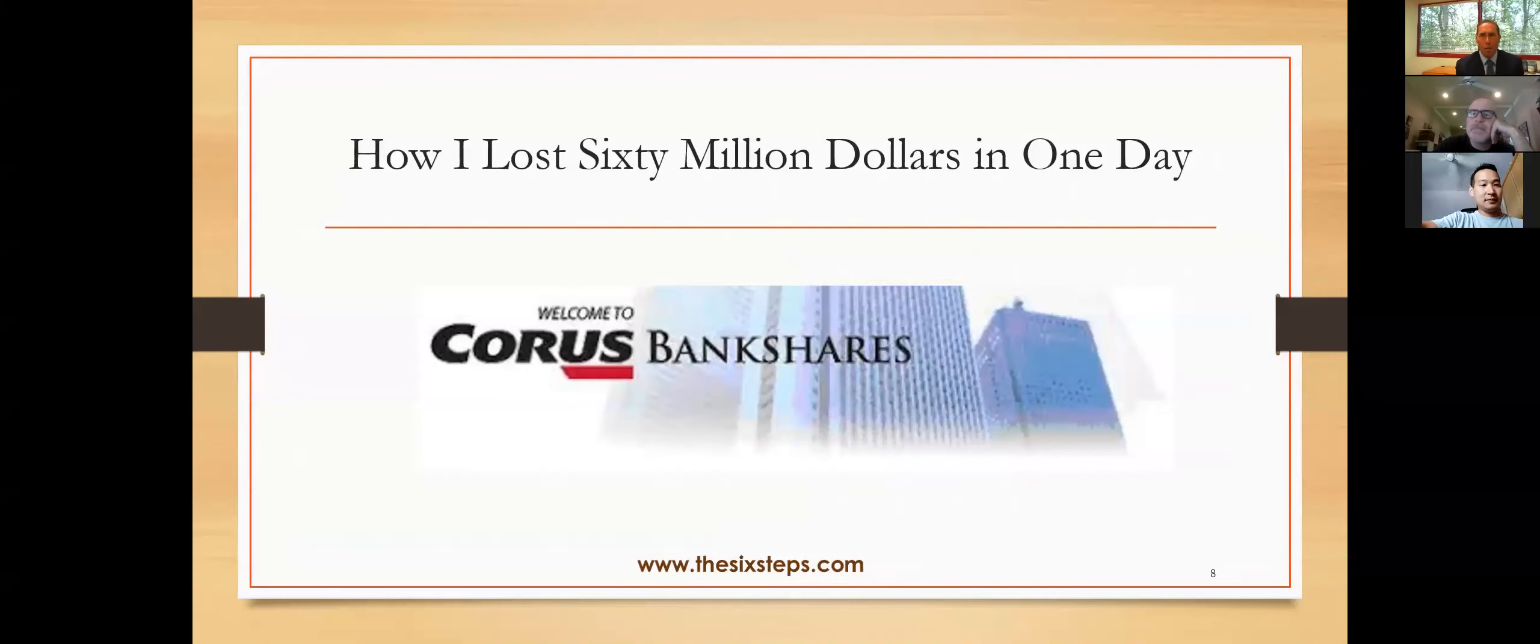Let me tell you a story about how I lost $60 million in one day. This is a true story. There was a bank called Corus Bank Shares. Corus Bank Shares had more than $4 billion in outstanding real estate loans. They were one of the largest real estate lenders in the country. On Friday afternoon, September 11, 2009, the FDIC closed Corus Bank and seized all its assets. When most Americans read about this on Monday in the newspaper, it probably felt like just another bank going bankrupt. There were 500 banks going bankrupt that year.